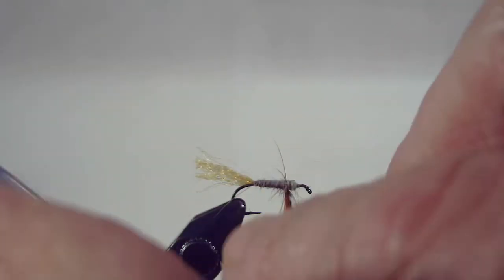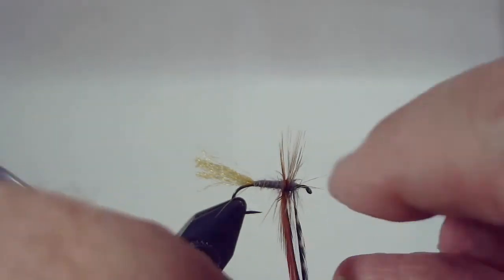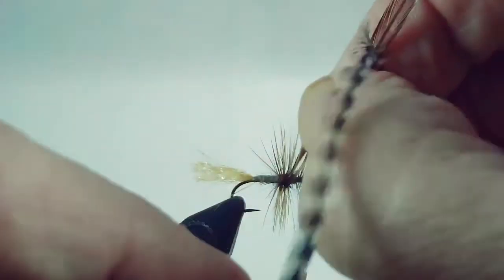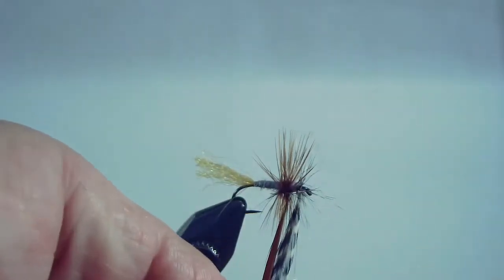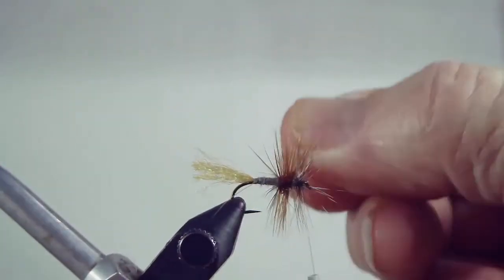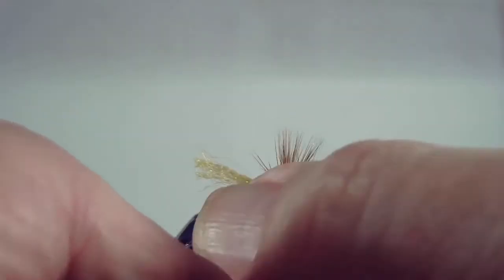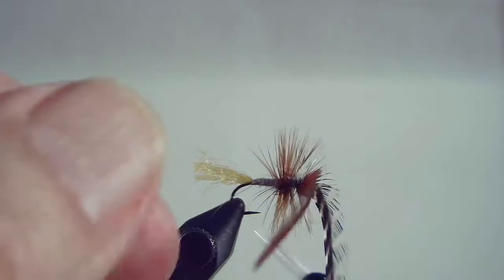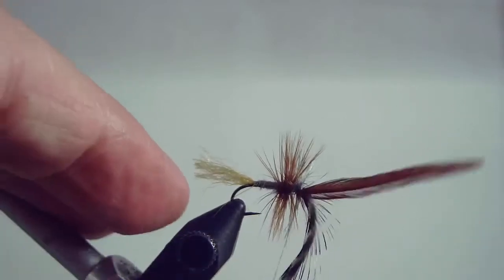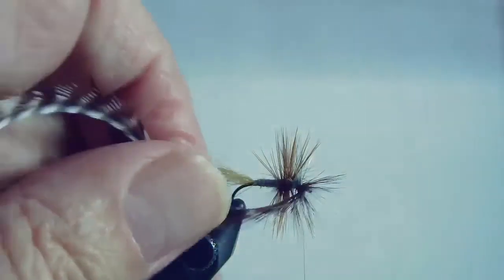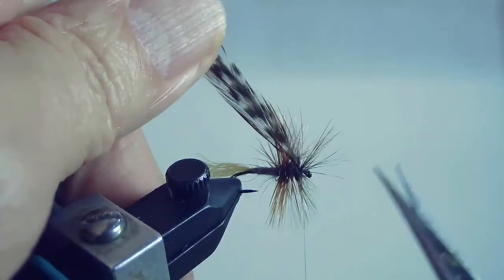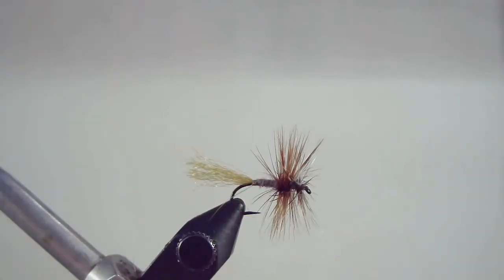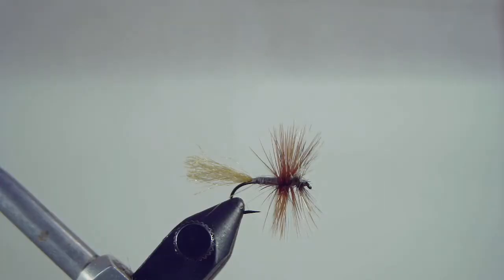Try not to crowd the eye too much and then tie them off. Now we'll trim the excess hackle and now we're ready for a whip finish and there you have it.